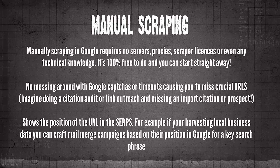Manual scraping actually shows the position of the URL in the SERPs, which is really handy. You can harvest local business data to craft mail merge or cold email campaigns based on their position in Google for any given key phrase. You'll be able to tell them their name, their website, their search position, and send out 5,000 emails saying 'you rank 33rd for Croydon roofing — would you like to speak to me about getting you higher for that phrase?' Manual scraping promises a hundred percent accuracy with no real costs.